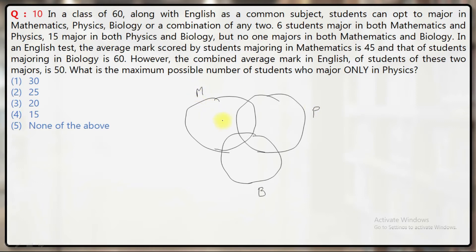The combined average mark in English of students of these two majors is 50. What is the maximum possible number of students who major only in Physics? Let's take a equals the number of students who major only in Math, b for Physics, and c for Biology.